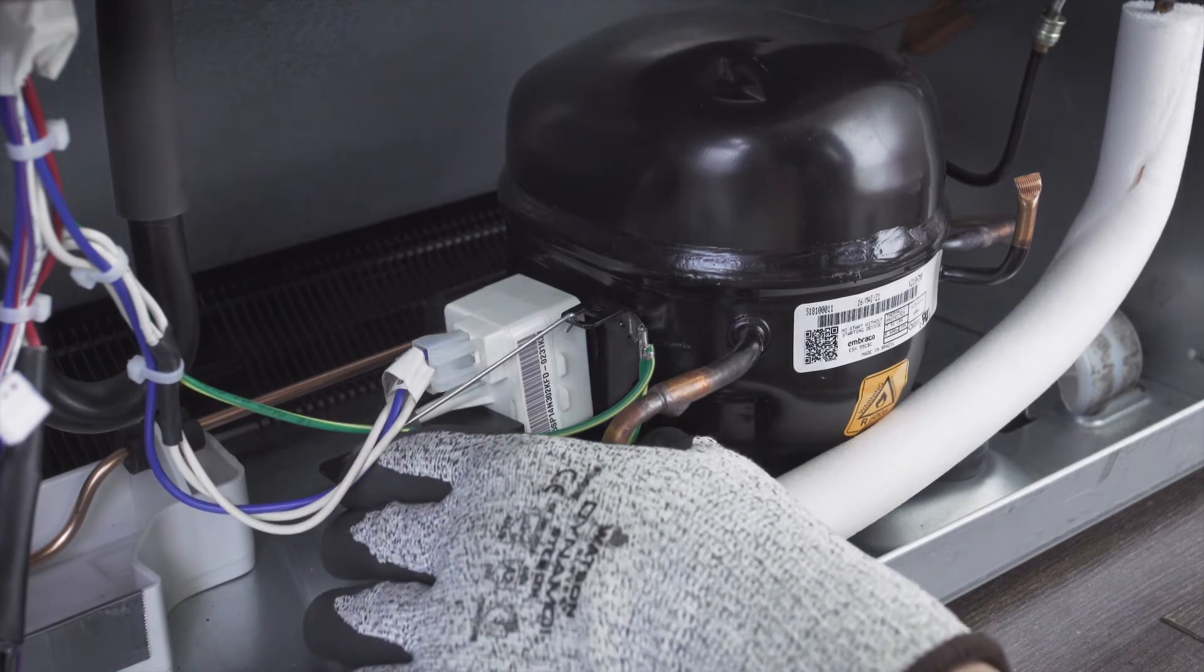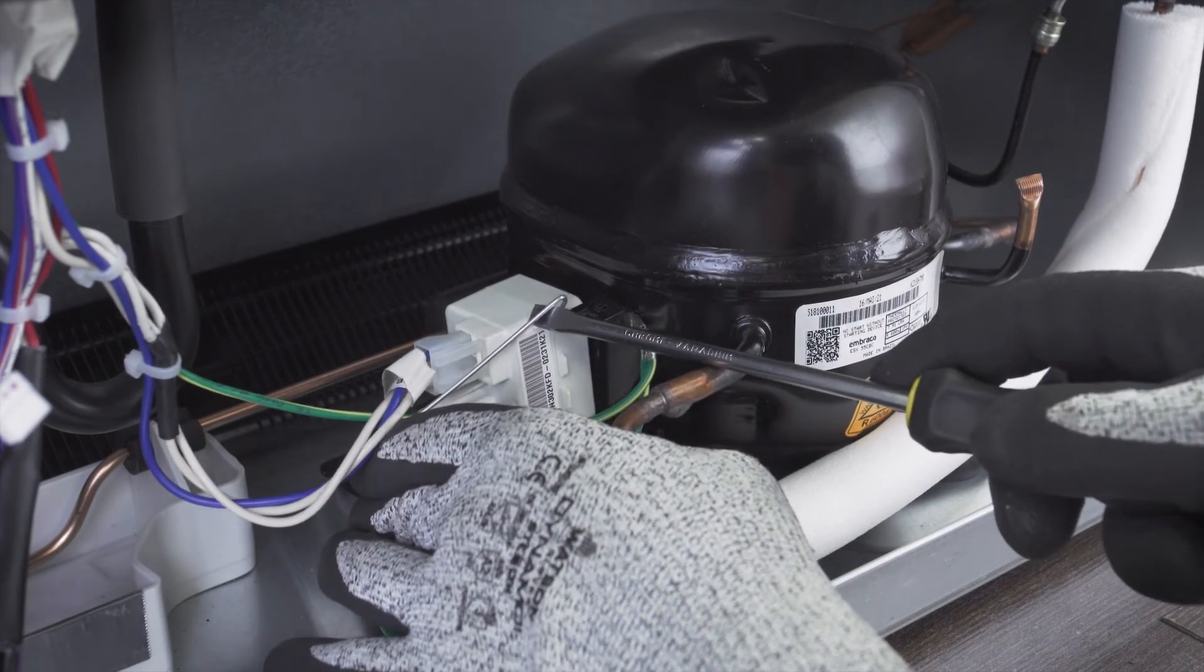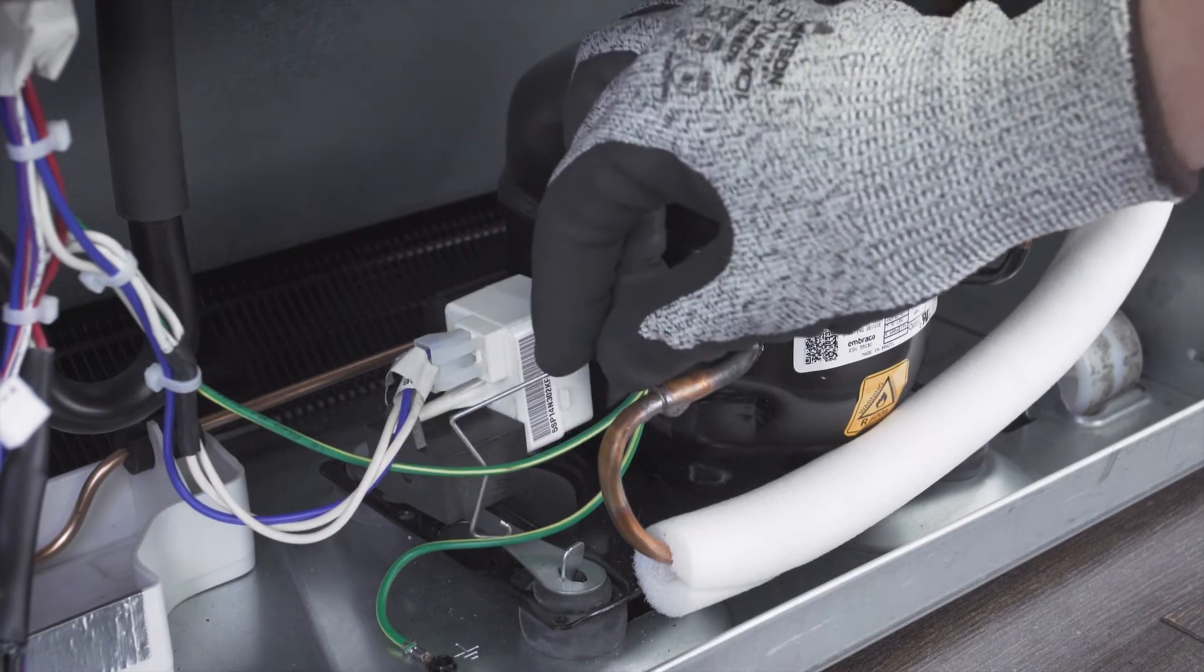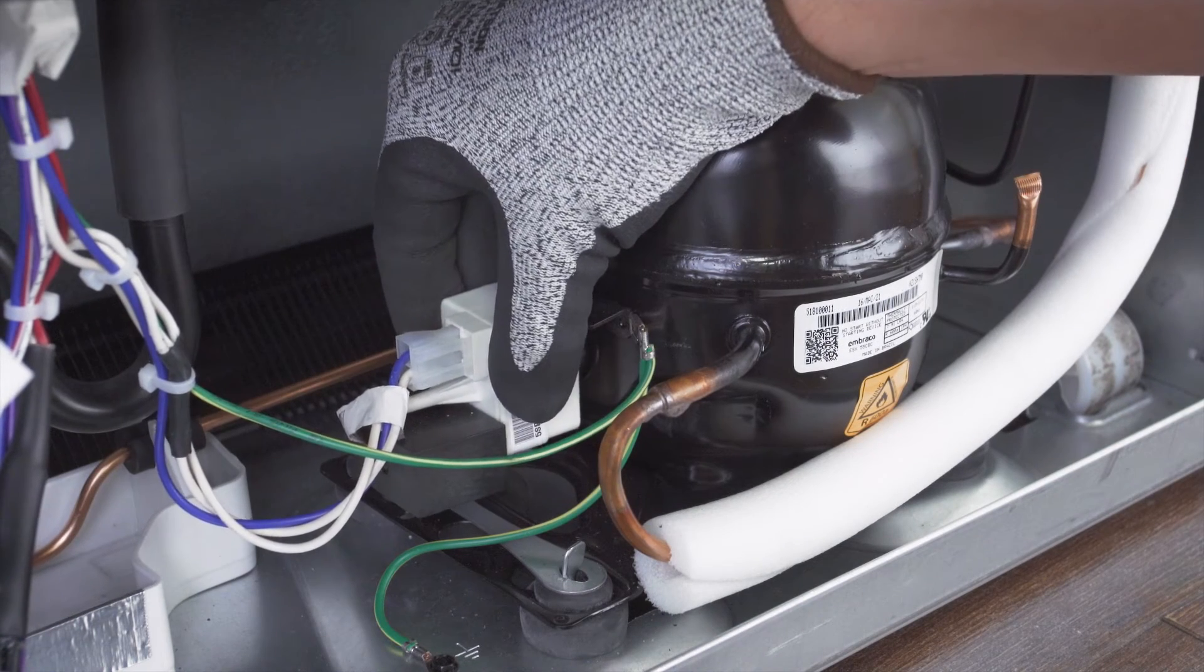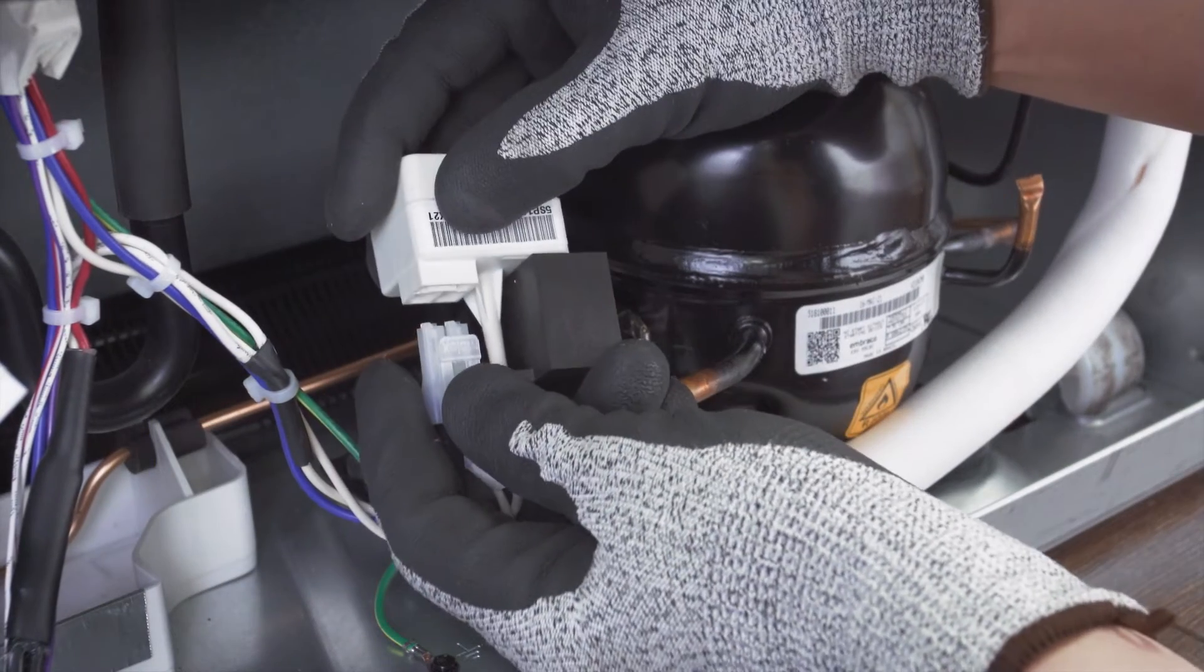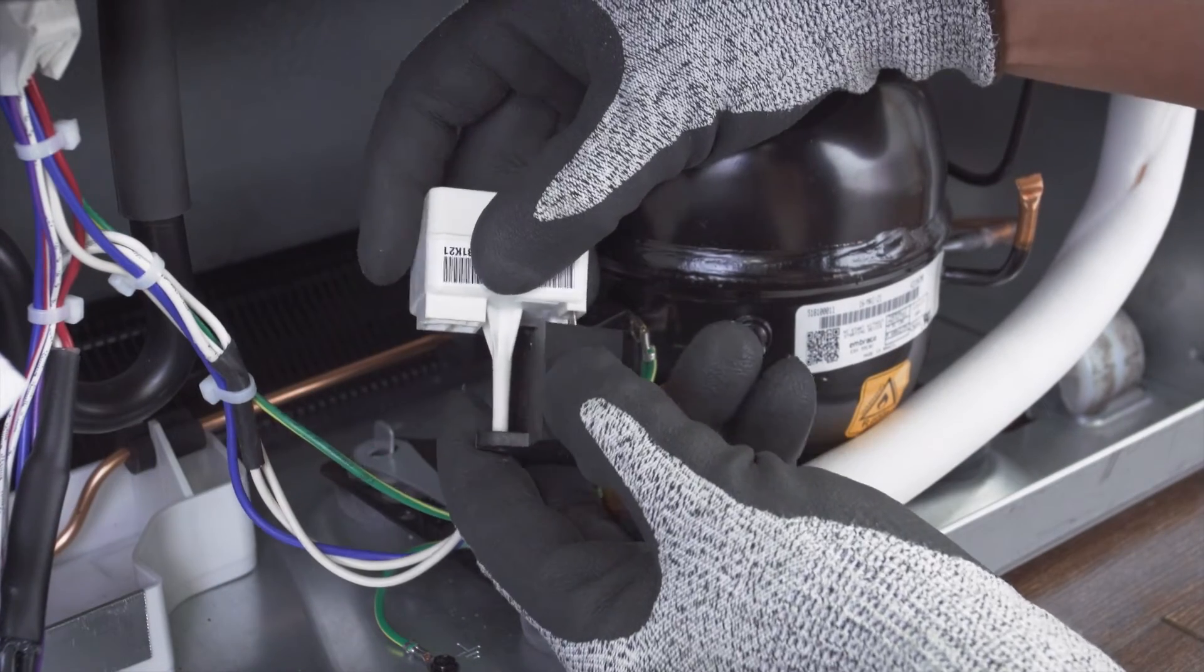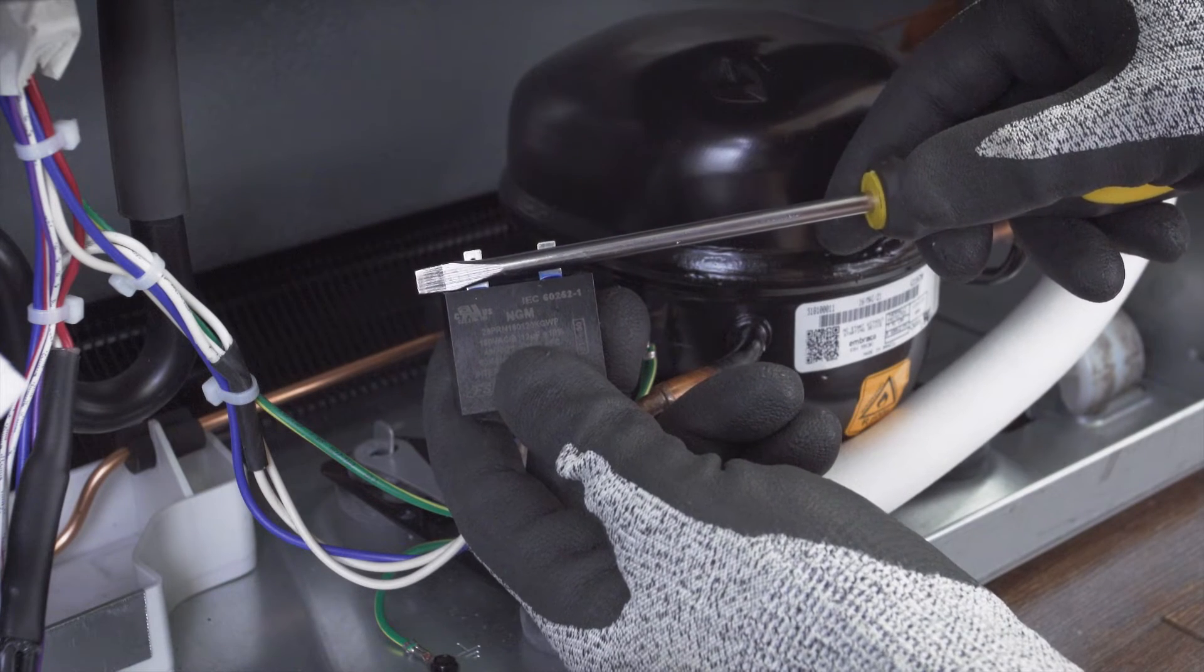In other models the capacitor will be mounted directly on the relay. In this case you'll have to remove the retaining clip. Next remove the capacitor and relay. Now separate the capacitor from the relay. Finally discharge the capacitor.